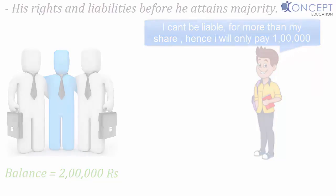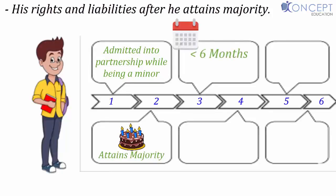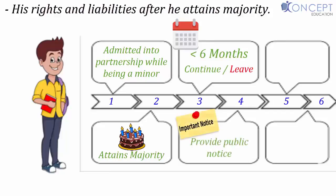On attaining majority, a minor partner must decide within six months whether he will continue in the firm or leave it. Whatever he decides, he must give a public notice — whether he chooses to become a partner or not. If he fails to give a public notice, he is deemed to have become a partner in the firm at the end of six months from attaining majority.